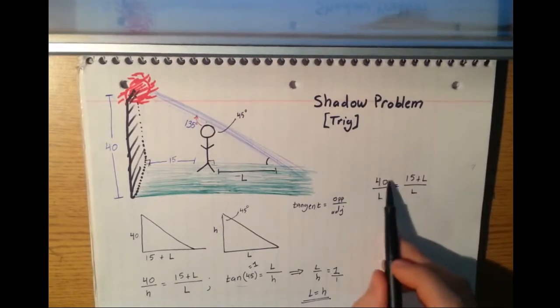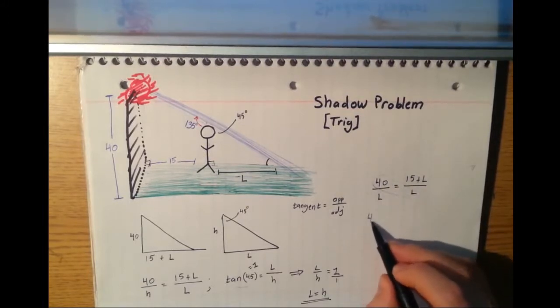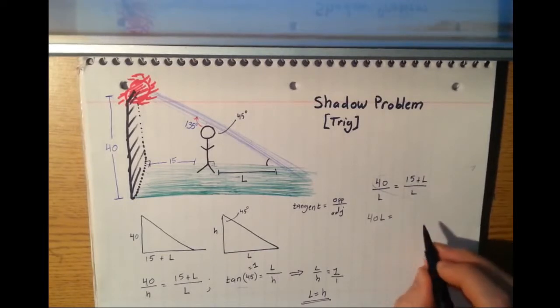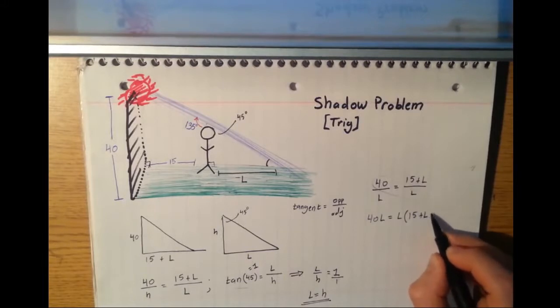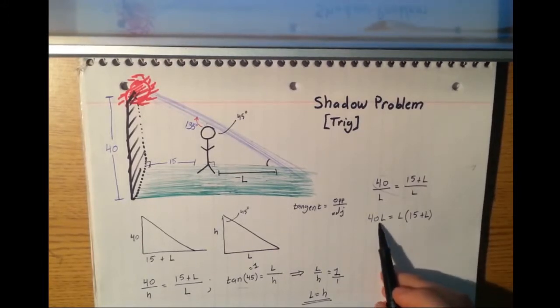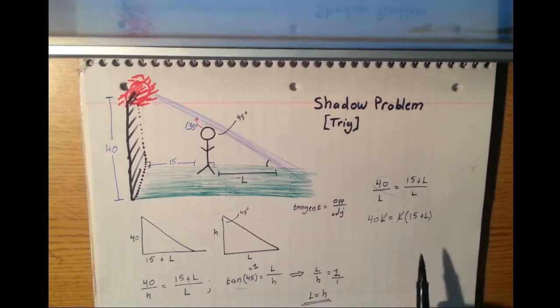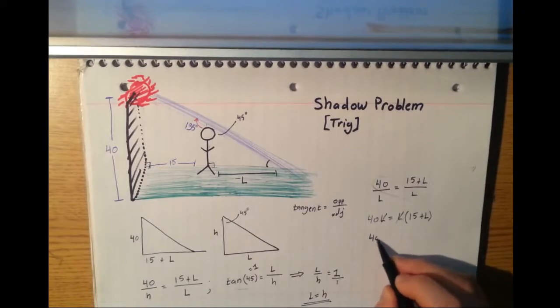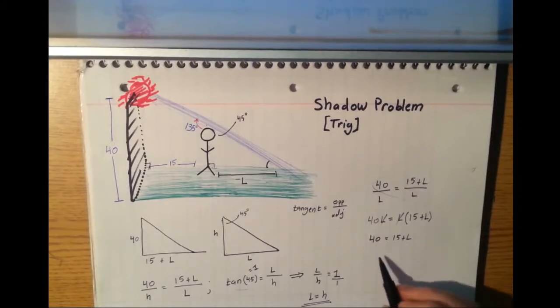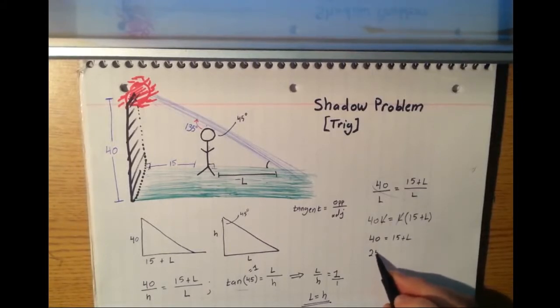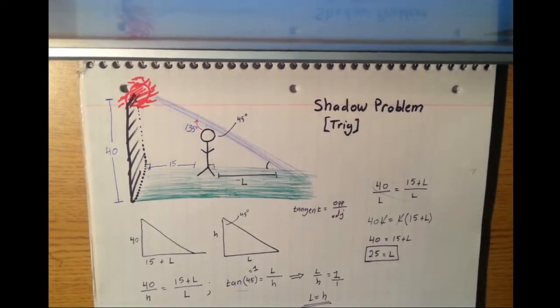Now, I'm going to go ahead and cross multiply like this. So I'm going to get 40L is equal to L times 15 plus L. Now, I have L as a common factor on both sides, so I can cancel that out by dividing by L. Then I get 40 equals 15 plus L. Moving the 15 over to the other side, I'm going to get 25 equals L. And there's our solution right here.